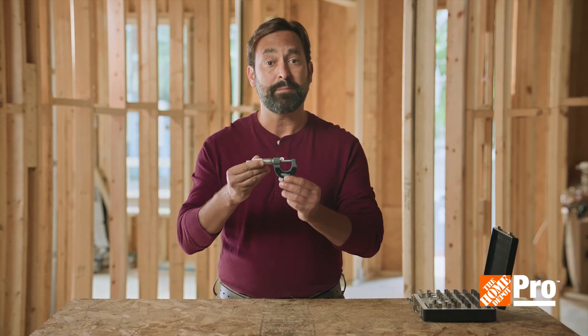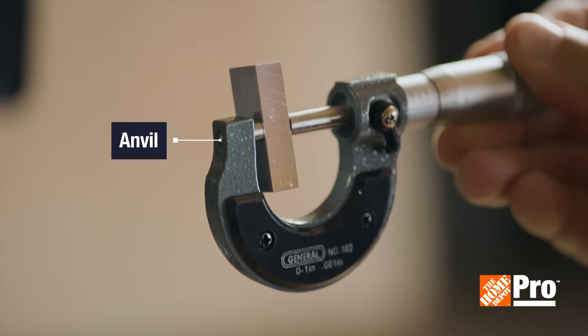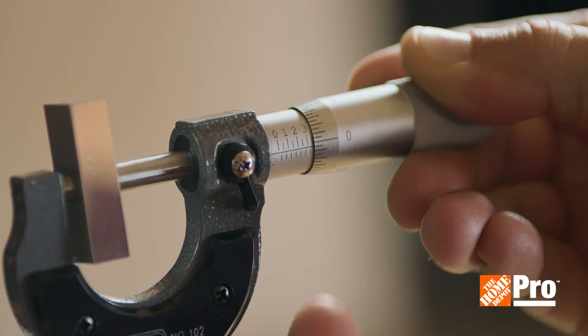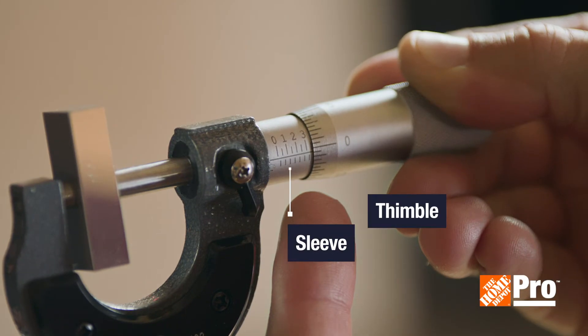You take a measurement by placing an object between the anvil and the ratchet, and then adding together the numbers on the sleeve and the thimble.